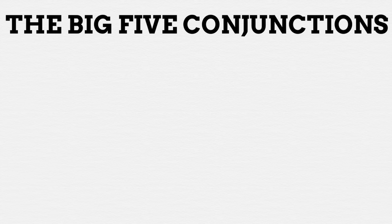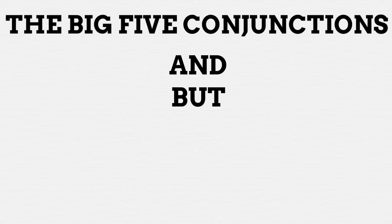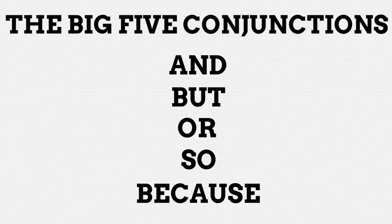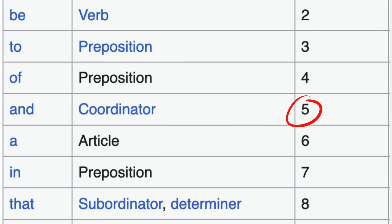Seemingly however, there are five which are seen as the pinnacle of this word class: the aforementioned 'and,' as well as the words 'but,' 'or,' 'so,' and 'because.' These five simple words crop up all the time within language. Of the five of them, 'and' is by and far the most commonly used, being the fifth most commonly used word according to one ranking.